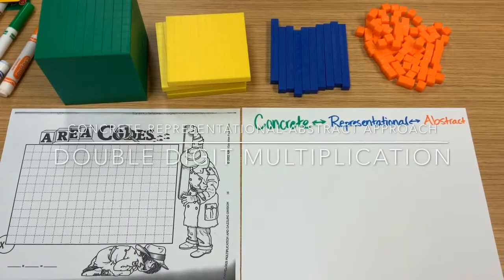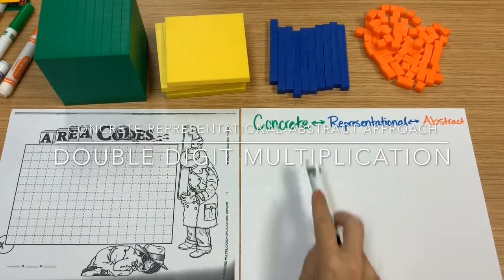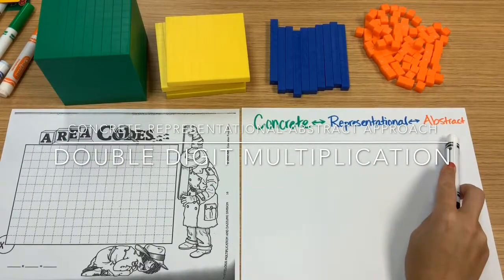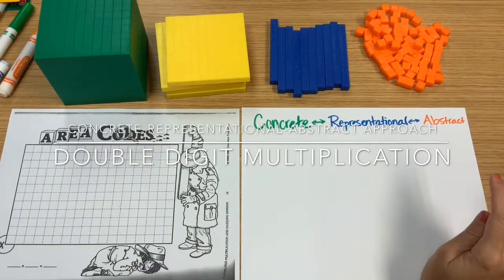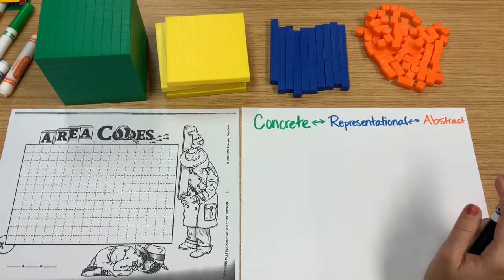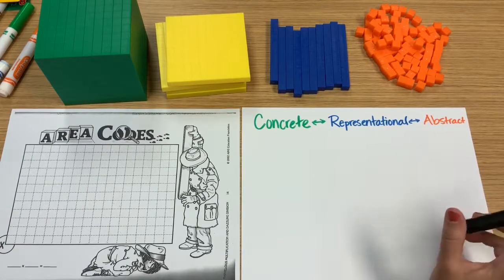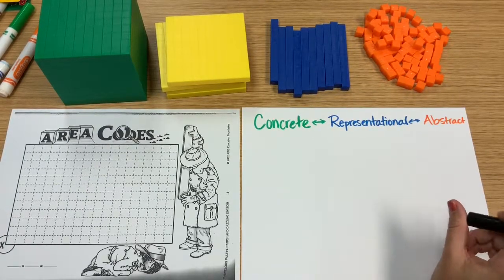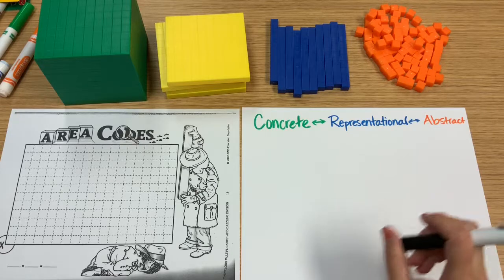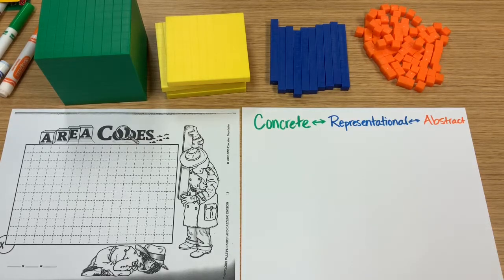Hi everyone, Alisha Zari here, and today we're going to be reviewing the Concrete Representational Abstract approach when it comes to double digit multiplication. This is most appropriate for fourth grade, but it also could be an extension of third grade and definitely review for fifth grade students as well.